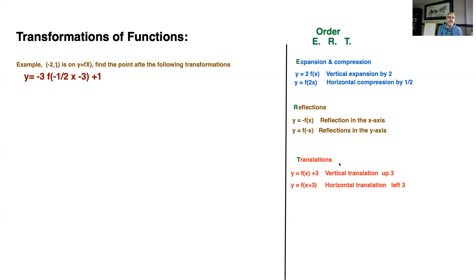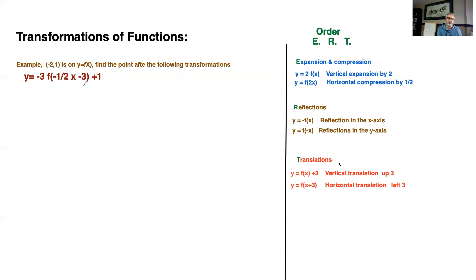I'm giving you an example with just one point. If you have a graph, take important points on the graph and apply all the transformations to those points. Line them up, do all the transformations, get your final points, plot all your final points, and connect the graph. We're going to take an example with just one point: negative two and one.